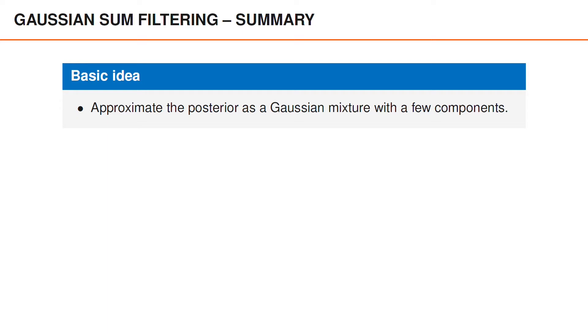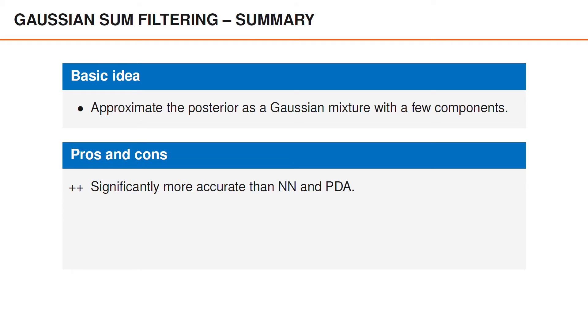To summarize, we have learned about Gaussian sum filters, which approximate the posterior as a Gaussian mixture. In the examples that we studied, the Gaussian sum filters approximated the posterior density significantly more accurately than the nearest neighbor and PDA filters. Another nice property is that we can adjust the complexity of the algorithm to the available computational resources, for instance by maintaining many components or just a few.